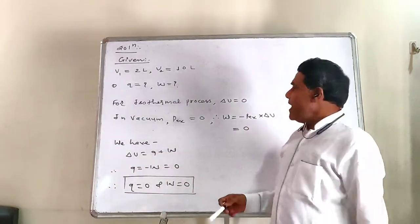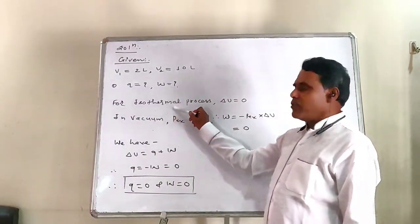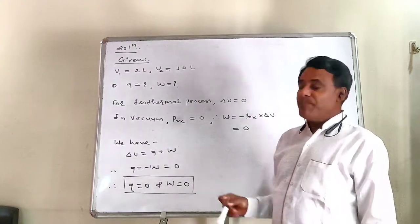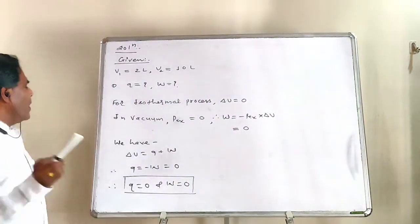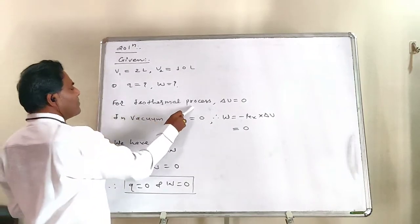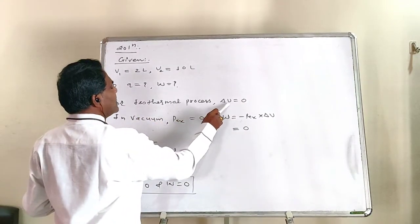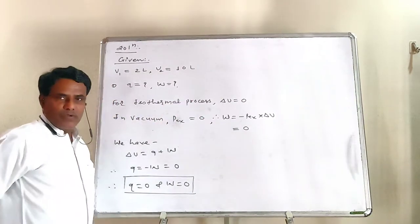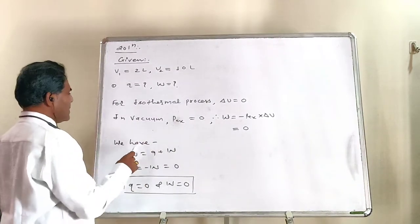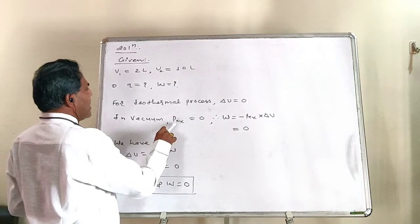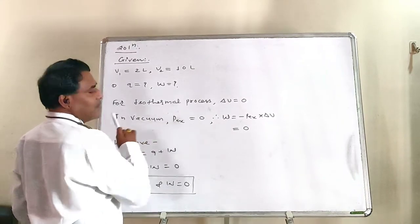Do what is then we read. A, expansion occurs isothermally as given in the problem. And expansion of gas takes place in vacuum. Now we know, for isothermal process, internal energy change delta U is equal to zero. Right? Internal energy change zero hogar, isothermal process. In vacuum, opposing pressure is equal to zero.